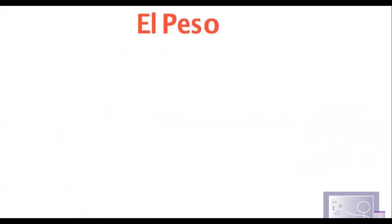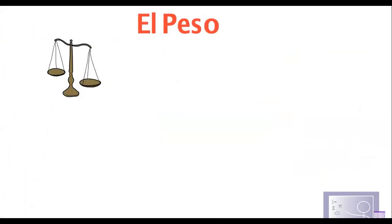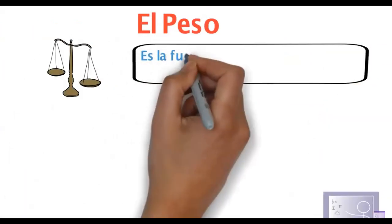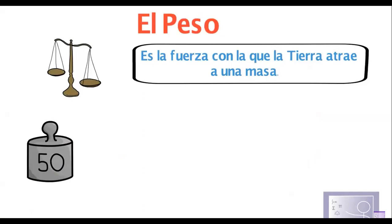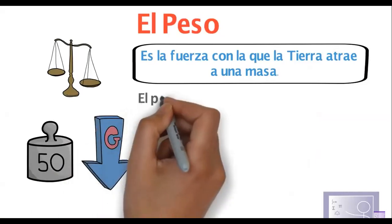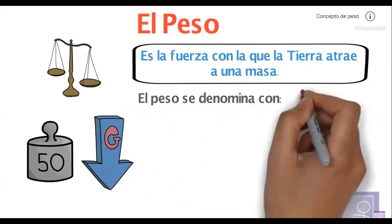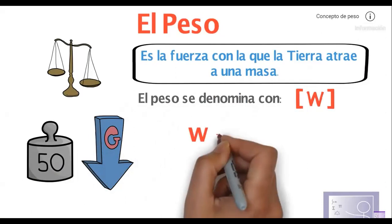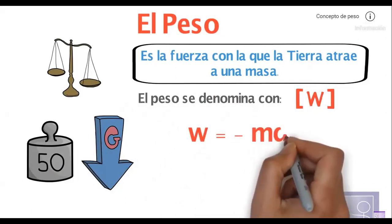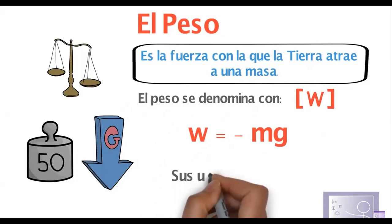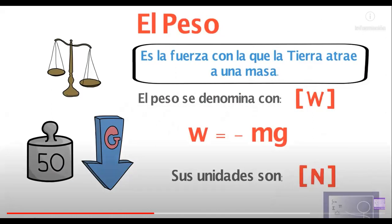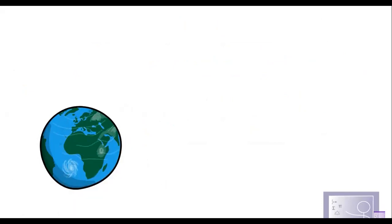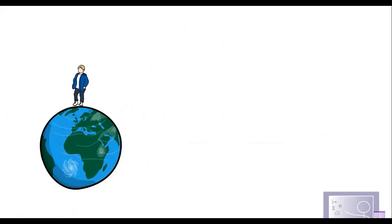El peso lo podemos definir como la fuerza con la que la Tierra atrae a una masa. Todos los objetos, al tener masa, sienten o experimentarán una fuerza llamada peso, debido a la fuerza de gravitación universal que existe en el planeta. El peso se va a denominar con la letra W, que viene del inglés. El peso lo podemos calcular como igual a la masa por la fuerza de gravedad. Al ser una fuerza, el peso se establece con unidades de Newton. Por ejemplo, si estoy en el planeta Tierra, ejerce a través de su fuerza gravitacional la aceleración de 9.8 m/s².